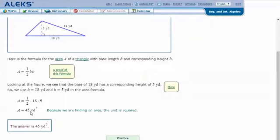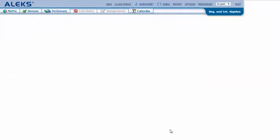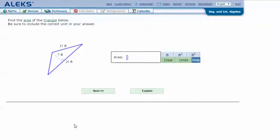But the other way, 18 times 5 is 90, and half of 90 is also 45. And our unit is yards squared. Let's try another one: find the area of the triangle below. Be sure to include the correct unit in your answer.